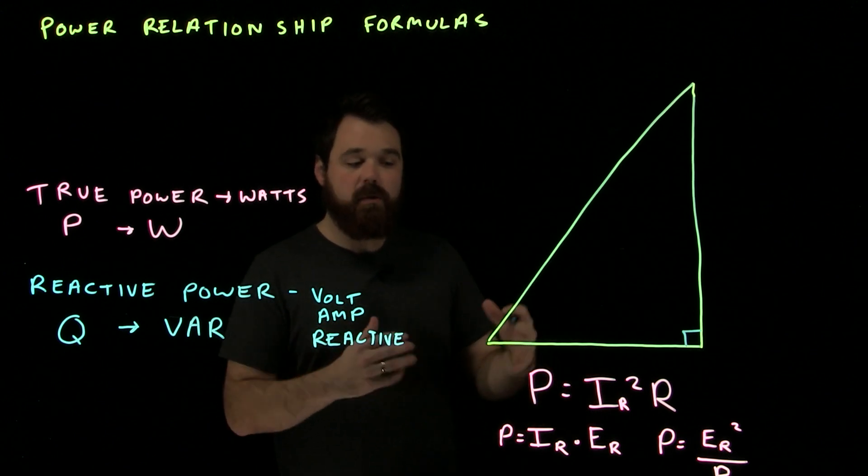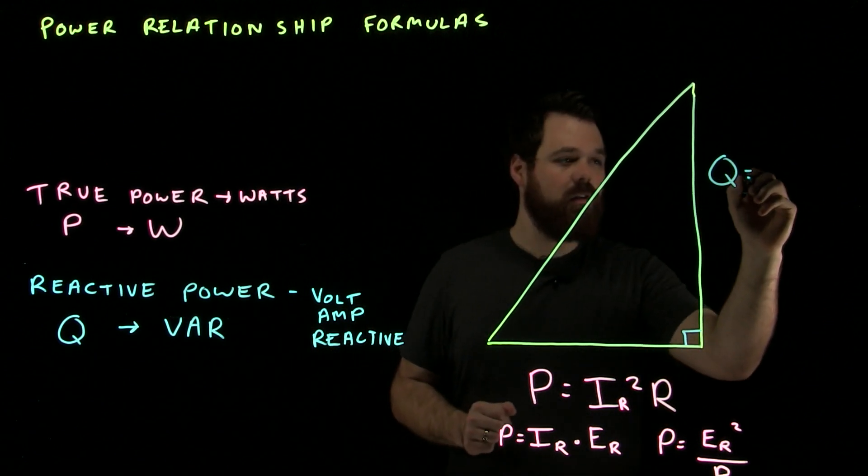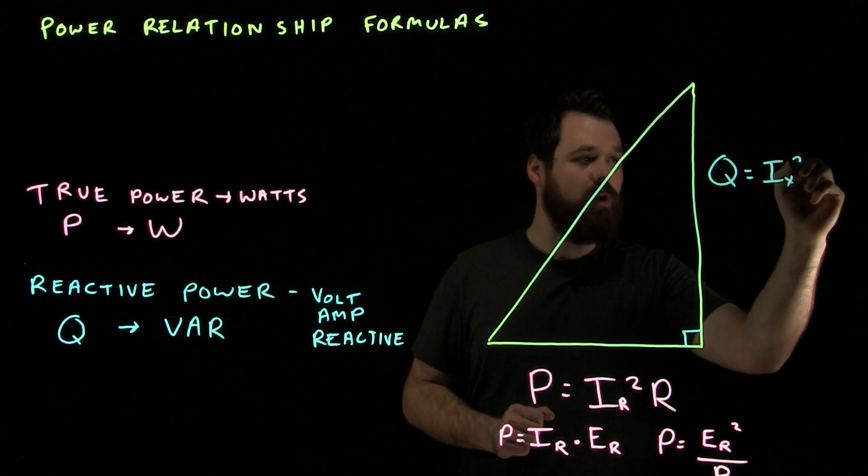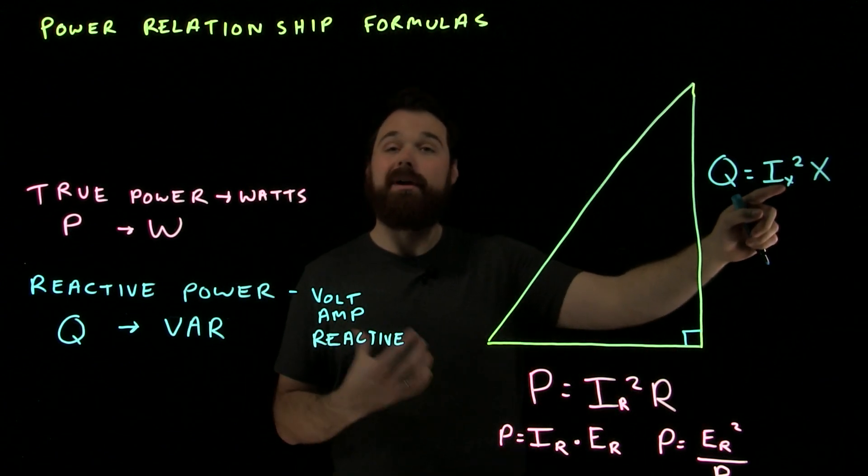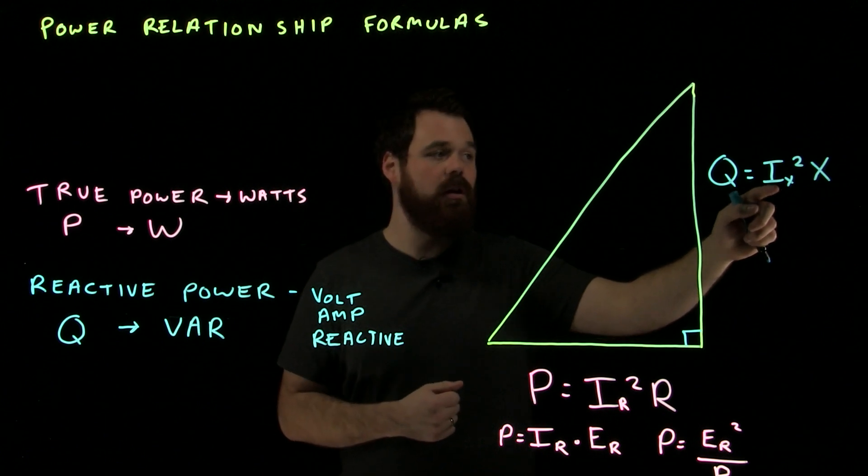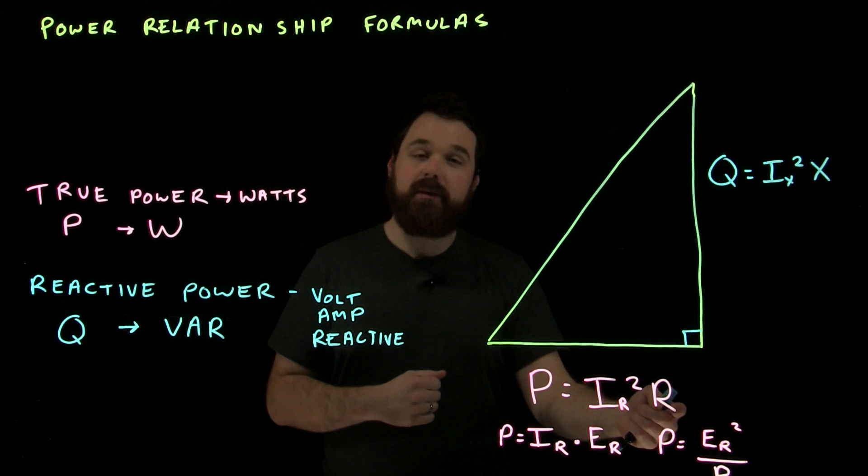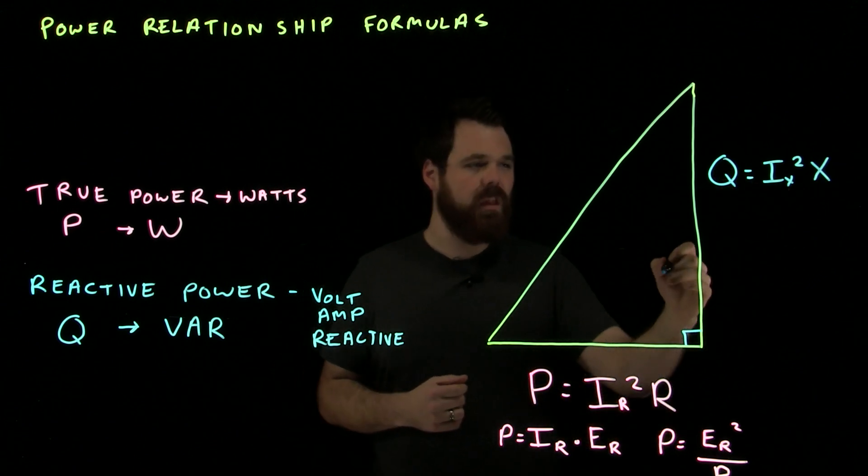The main formula, the one that I think we're going to use the most, is going to be Q, reactive power, equals I, X squared, times X. So, the current flowing through the reactive component, which is what the X is for, squared, times the reactants. Well, it's just the same formula, but coming from a different place.